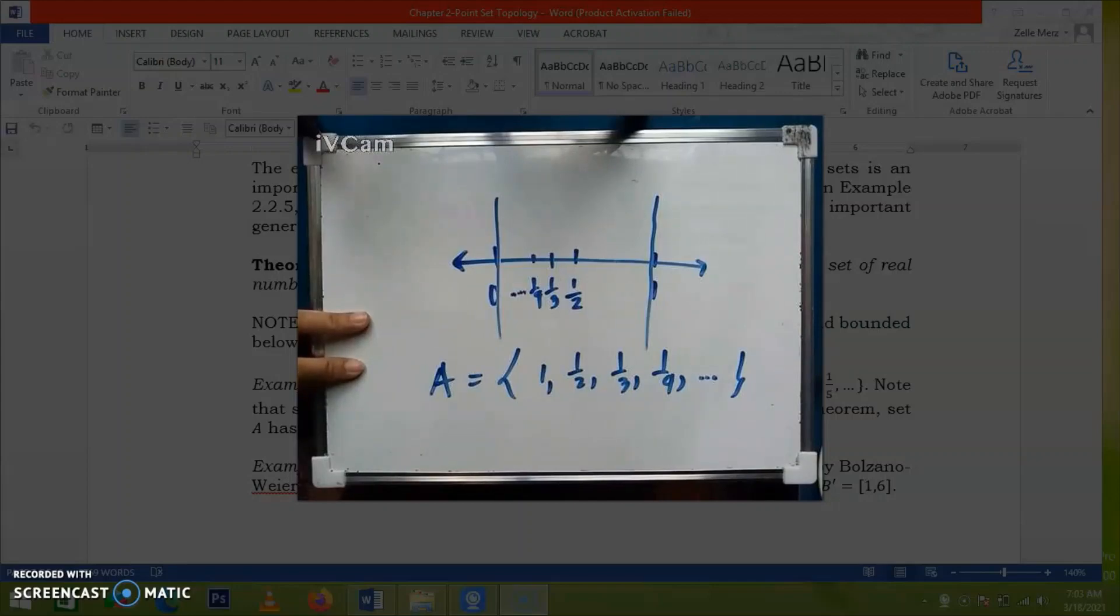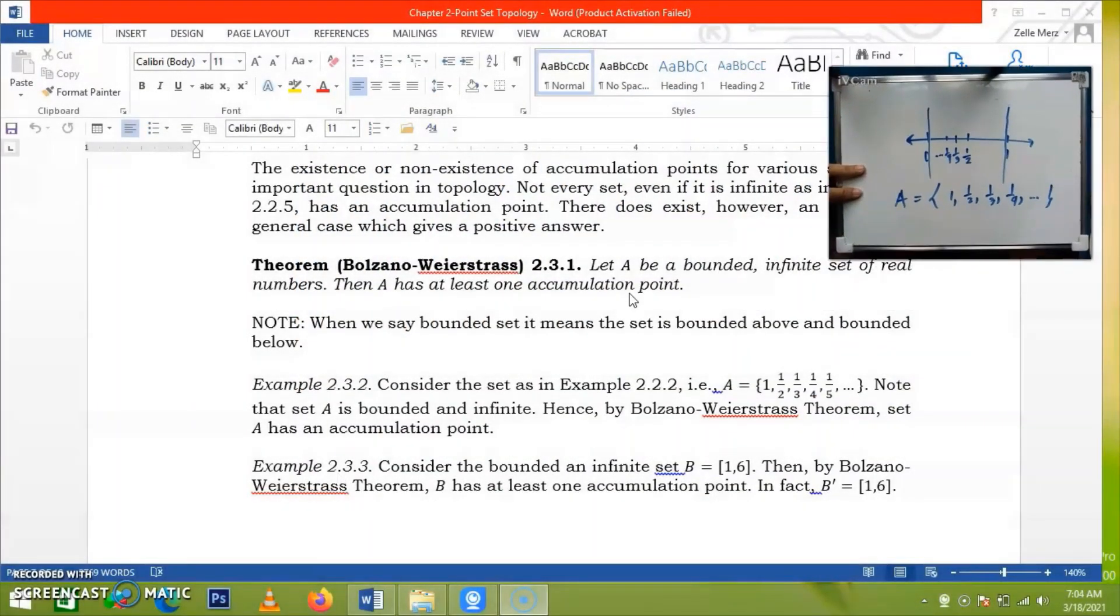So by using the Bolzano-Wierstrass theorem, if the set is bounded and infinite, then the set has at least one accumulation point. So of course, this set has an accumulation point, as discussed in our previous example.